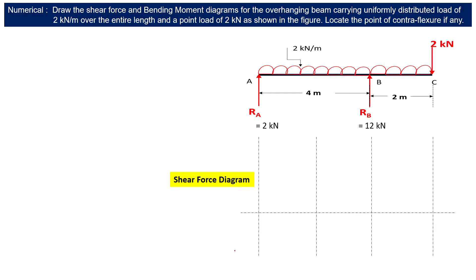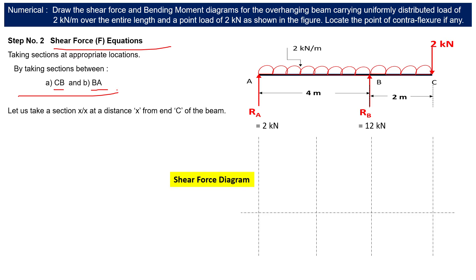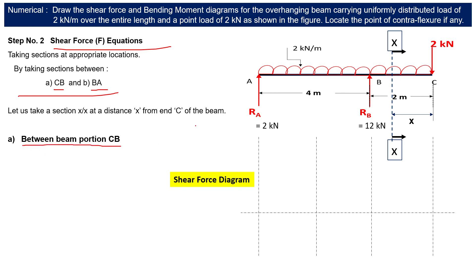Now we draw the shear force diagram. We take sections at appropriate locations. There are two regions: between C and B, and between B and A. So we develop two shear force equations — one applicable between C and B, and another between B and A.